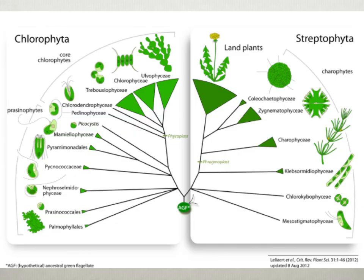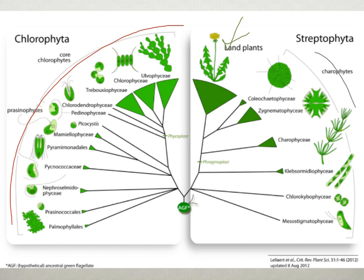Here we have a different way of organizing our plant-like protists. We can see our chlorophytes and the different organisms within that group, and then we have our land plants right here, along with some of the other multicellular or colonial algae.